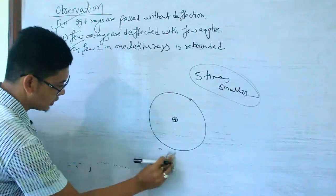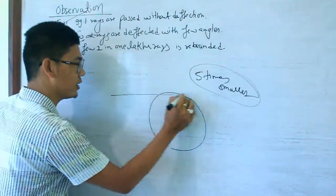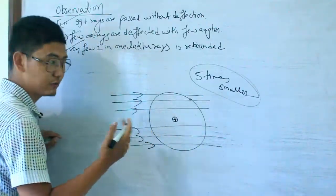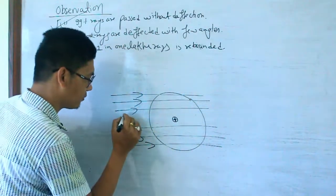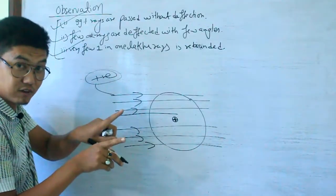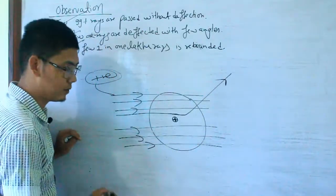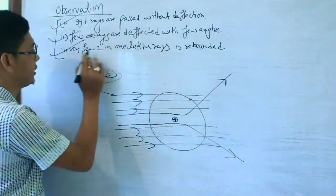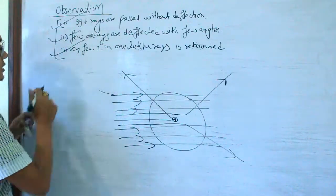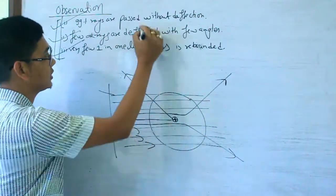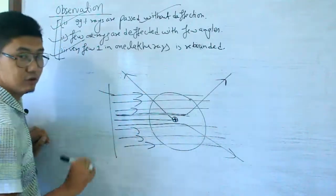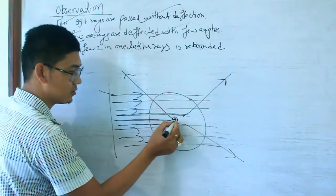There are 3 observations and 3 conclusions. Most atoms are hollow, so 99% of alpha particles pass straight through. Some alpha particles pass near the nucleus and are deflected with small angles due to the positive charge repulsion. Very few — 1 in 1 lakh — directly encounter the nucleus and are rebounded. This is Rutherford's explanation.